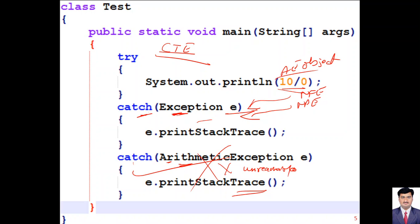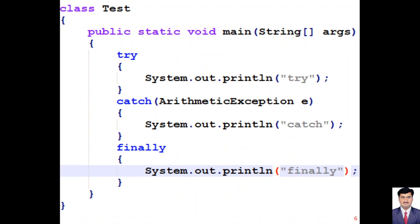If a generic catch(Exception e) block is placed before a specific catch(ArithmeticException e) block, the compiler generates a compile-time error for unreachable statement, because the specific ArithmeticException catch block can never be reached — the generic Exception block will always catch it first. Always place the most specific exception classes first and the most generic last. However, for unchecked exceptions, you can have any number of catch blocks.